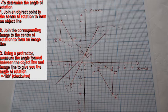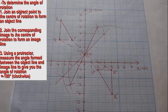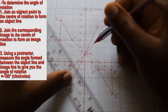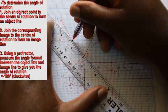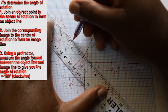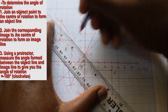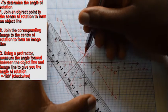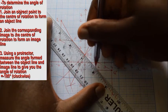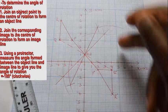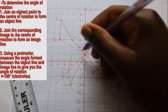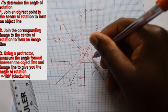To measure the angle of rotation, join an object point, say P, to the center to form what is known as the object line. Also, join the corresponding image point P' to the center to form what is known as the image line. With an arrow, show the turn from the object line to the image line.